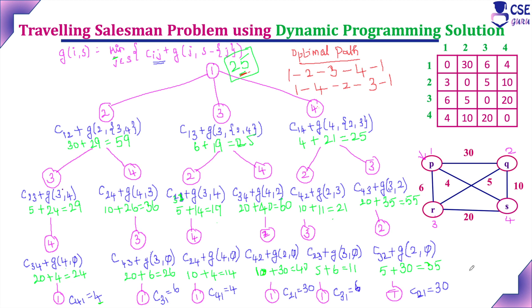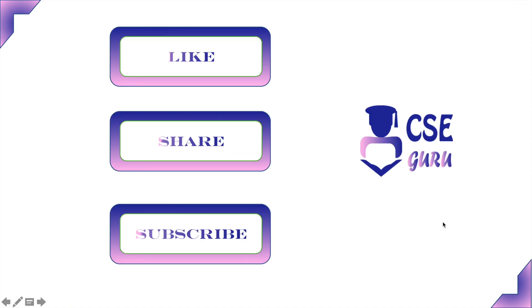This is the Traveling Salesman Problem solved using the dynamic programming approach with a simple state space tree method. The state space tree is provided for understanding purposes — it gives a pictorial representation that is easy to follow. However, from an exam point of view, you should implement the tabulation method, as this visual approach is only for understanding. Thank you for watching this video.